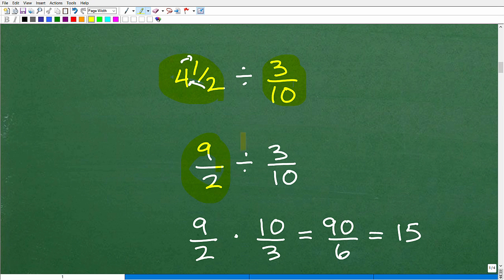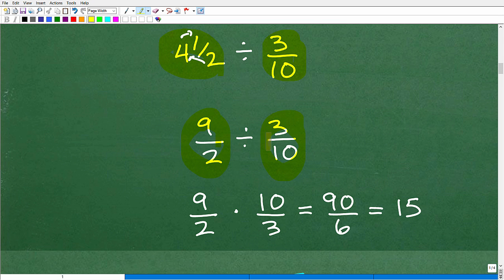All right, so we have 9 halves divided by 3 tenths. So what do we do now? Well, it's division, okay? When we talk about division of fractions, what you do is we're going to take that division operator. We're going to turn it into multiplication. But when I do that, the fraction to the right of this division operator, this guy right here, we have to flip it upside down, okay?